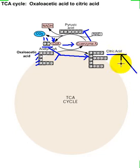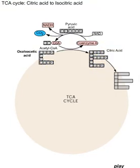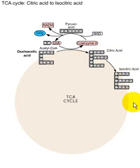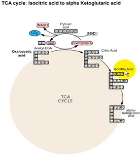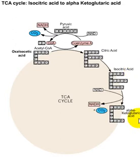Citric acid is the first molecule in the Krebs cycle — the first molecule formed in the Krebs cycle is citric acid. Citric acid converts to isocitric acid, and isocitric acid converts to alpha-ketoglutaric acid. In this step, 1 NAD is converted to NADH.